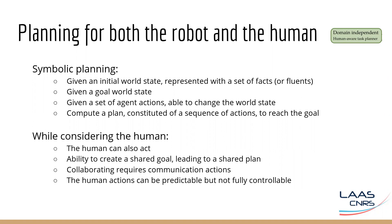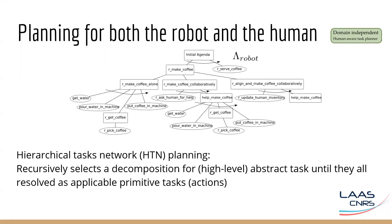At the result of the planning process, we can control the robot, but not the human. If we want the human to do something the planner wants, we have to make communication actions. But sometimes communication is not possible or is costly, for example if the environment is noisy. Still, human actions can be predictable but not fully controlled. To address this, we chose to use hierarchical task network (HTN) planning. Classical HTN planning aims at recursively selecting a decomposition for high-level abstract tasks until they are all resolved as applicable primitive tasks or actions — you put your expert knowledge about how you want the robot to do the tasks, and the robot chooses between several possibilities to perform a task.